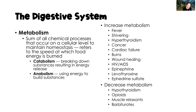Metabolism is really the speed at which food energy is burned. With catabolism, we're breaking down substances, resulting in energy release. Whereas anabolism is where we're using energy to build substances.